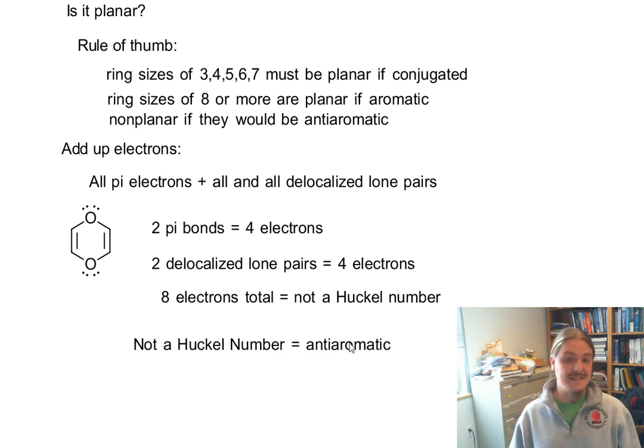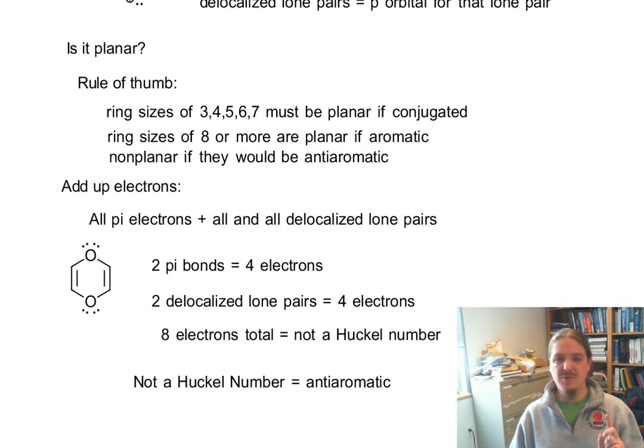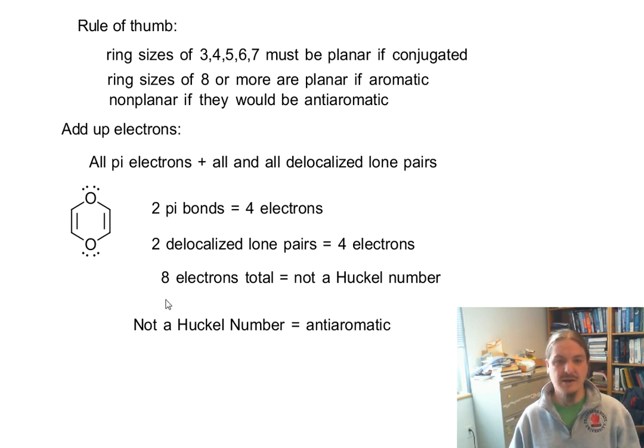So this compound, if existed, would be anti-aromatic. And so if we had failed one of the other criterion, if it was not cyclic, not conjugated, not planar, we have a non-aromatic molecule. But if it's cyclic, conjugated and planar, but with the wrong number of electrons, we have anti-aromatic.